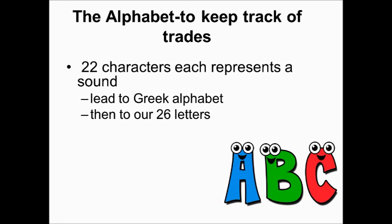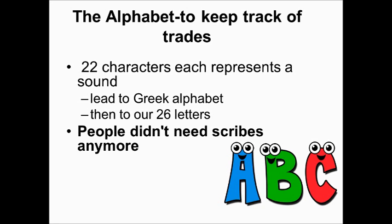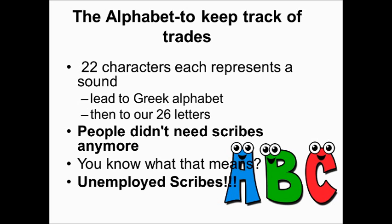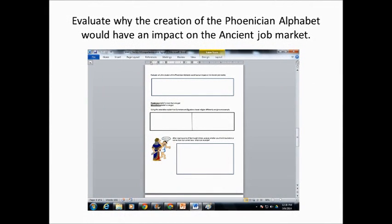We today have 26 letters that evolved from this alphabet. And you didn't need scribes anymore because you could remember the symbols yourself. If you didn't need scribes, you know what that means — unemployed scribes. It wasn't good to be a scribe after the Phoenician alphabet. At this point in your notes, it would be a great time to fill out the section about evaluating why the Phoenician alphabet would have had an impact on the ancient job market. Pause the video and try to answer that question.